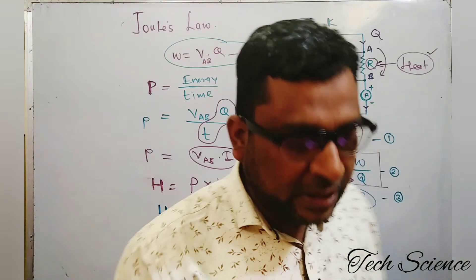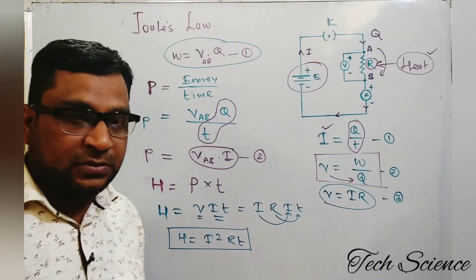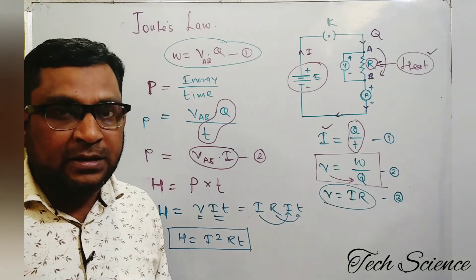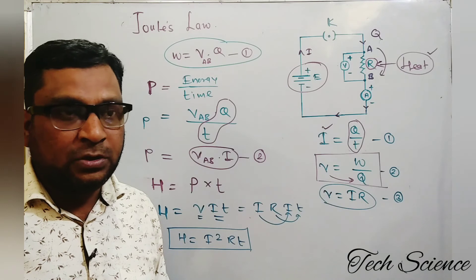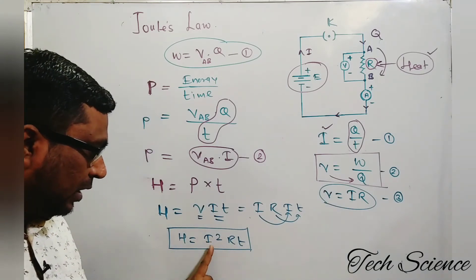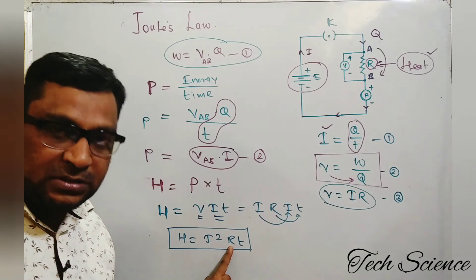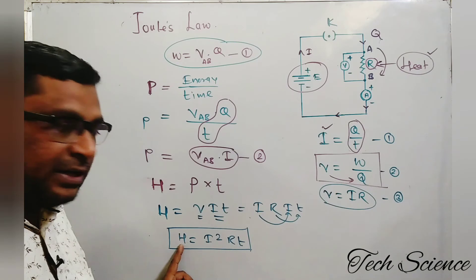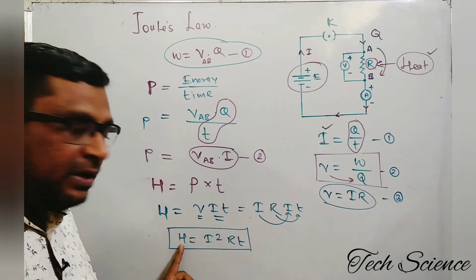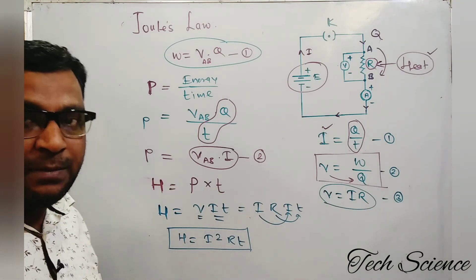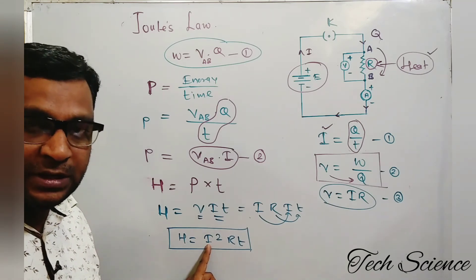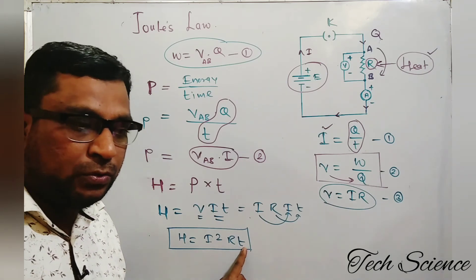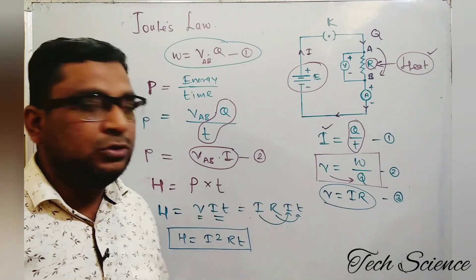Now we can state Joule's Law. The amount of heat generated in a conductor having resistance R, when a current I flows through it for a time T, is directly proportional to: number one, the square of the current; number two, the resistance of the conductor; and number three, the time for which the current flows. This is the final expression and statement for Joule's Law: H = I²RT.